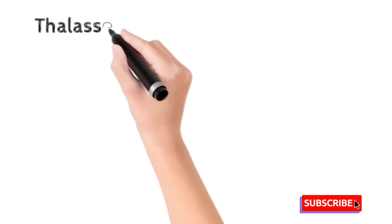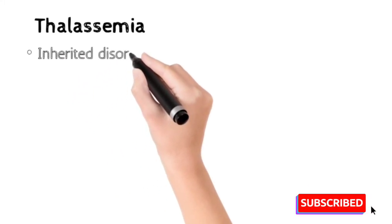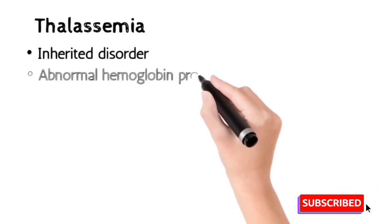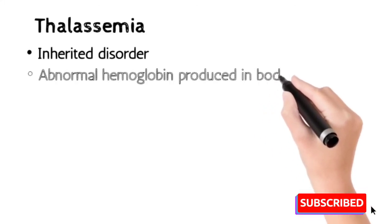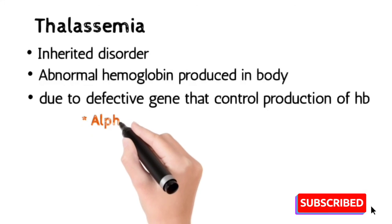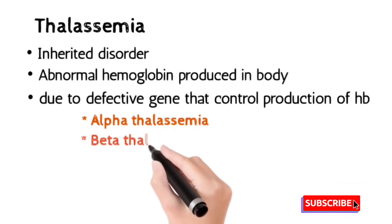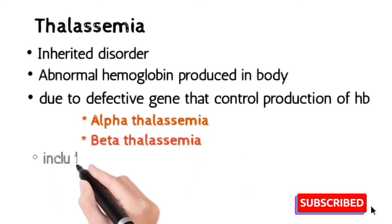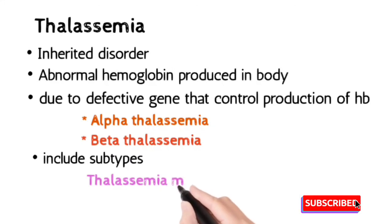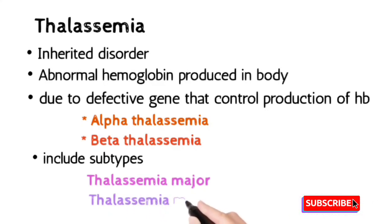Thalassemia is also a blood disorder that occurs due to abnormal hemoglobin, caused by defective genes present in the hemoglobin. There are two types: alpha thalassemia and beta thalassemia. Hemoglobin contains two types of chains — alpha chains and beta chains. If the defect is in the alpha chains, it causes alpha thalassemia; if in the beta chain, it is beta thalassemia. There are also major and minor subtypes. If both parents have the thalassemia gene, it can transfer thalassemia major to their children; if only one parent has the gene, it causes thalassemia minor.